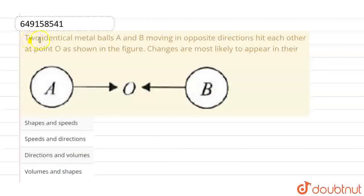Hello everyone, here the question is: two identical metal balls A and B moving in opposite directions hit each other at a point O as shown in the figure. Changes are most likely to appear in their...